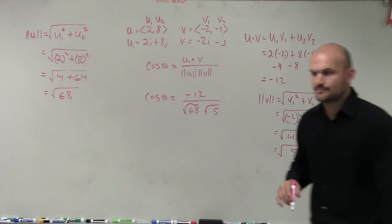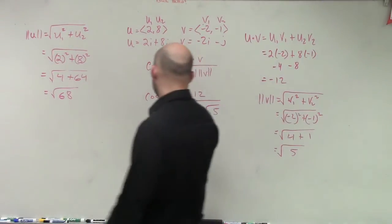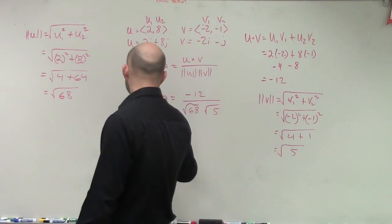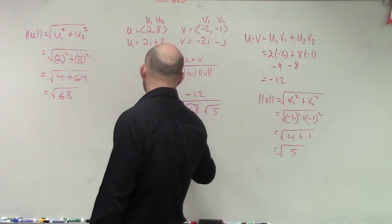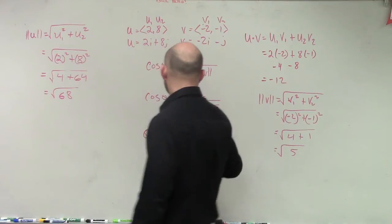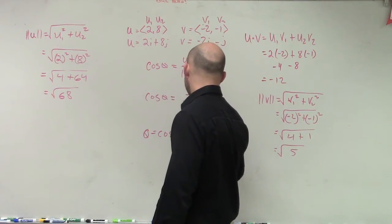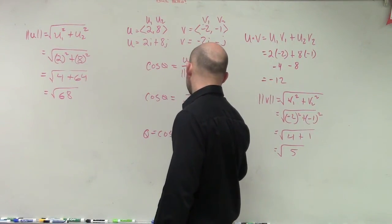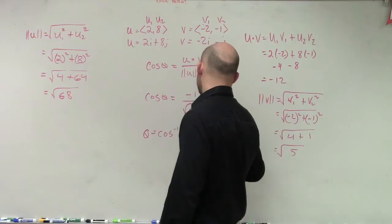So theta equals the inverse cosine of negative 12 over the square root of 68 times the square root of 5.